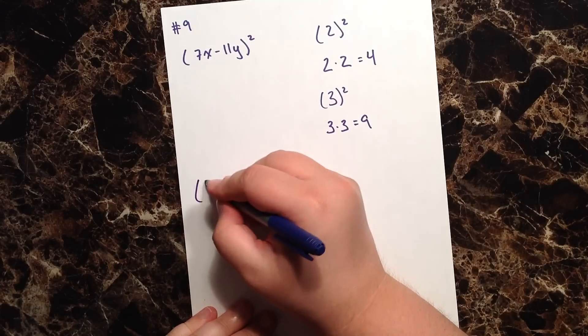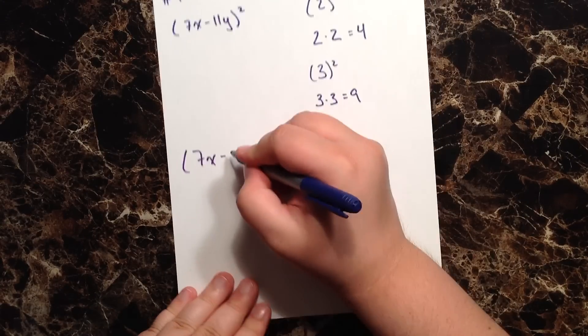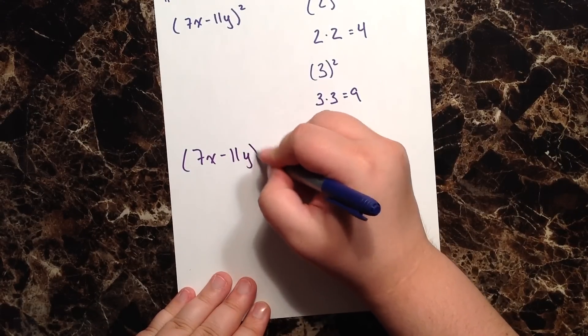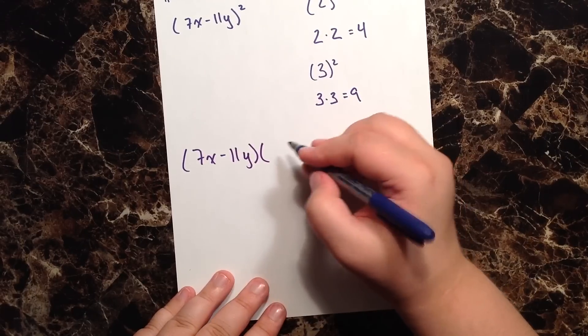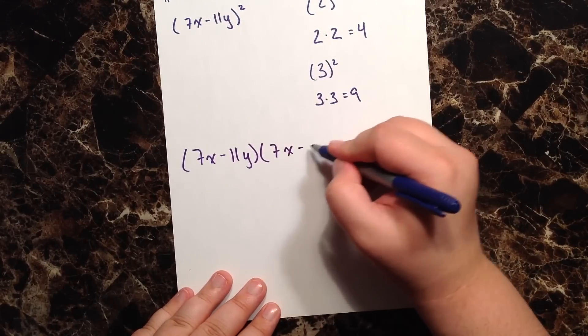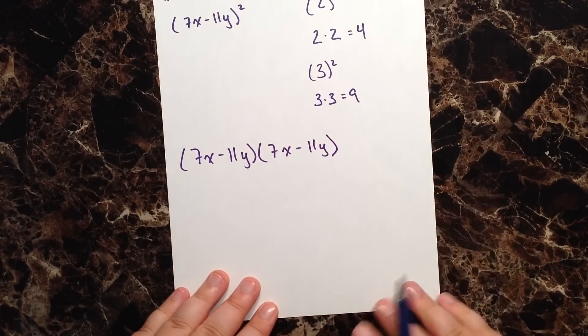So if they give us (7x - 11y)², well to square it means write it again and multiply: (7x - 11y)(7x - 11y).